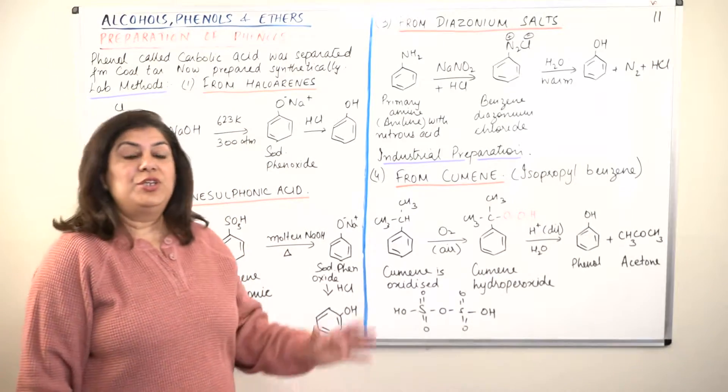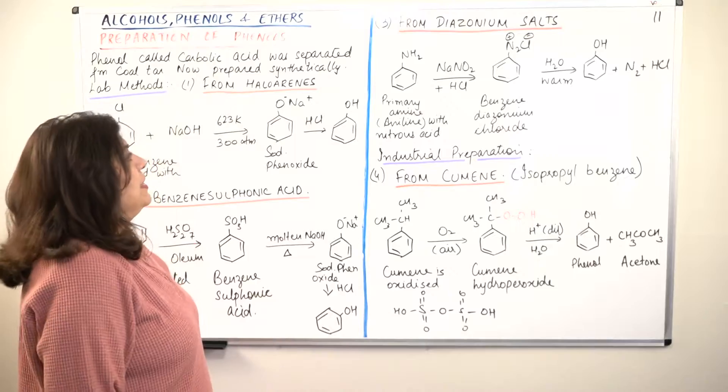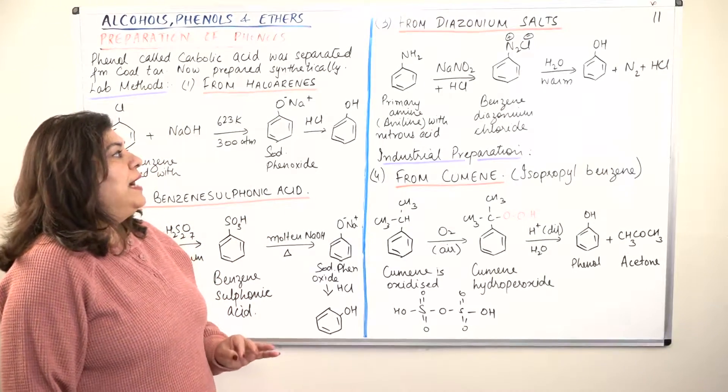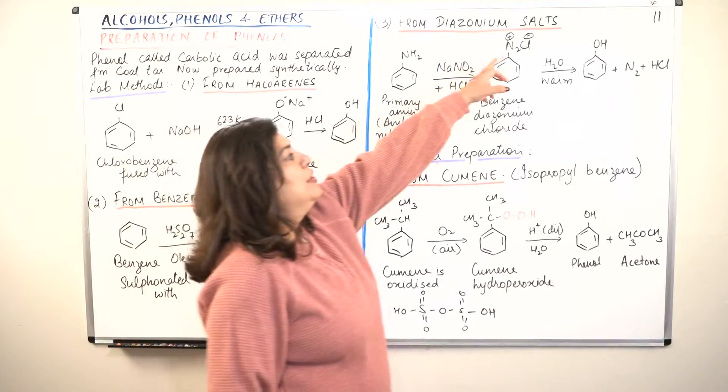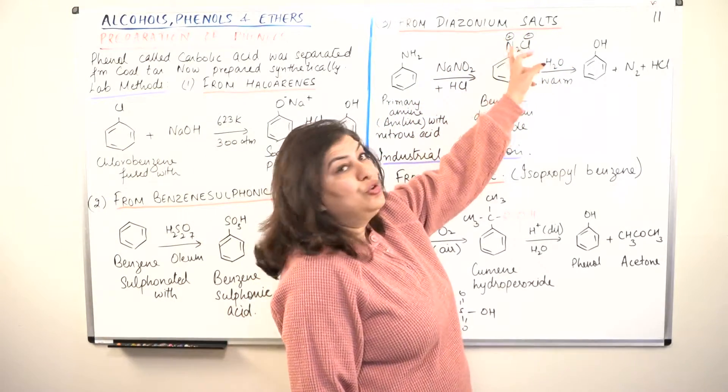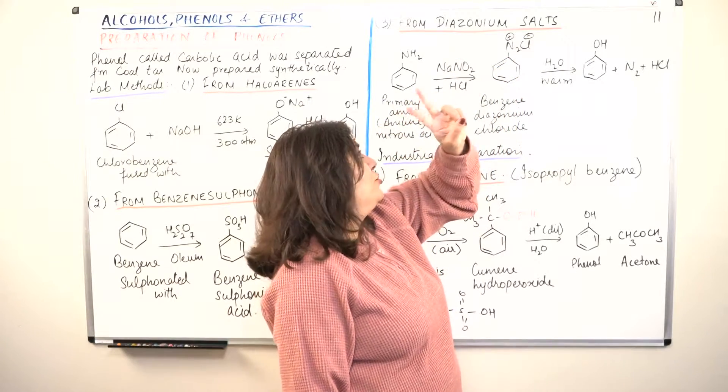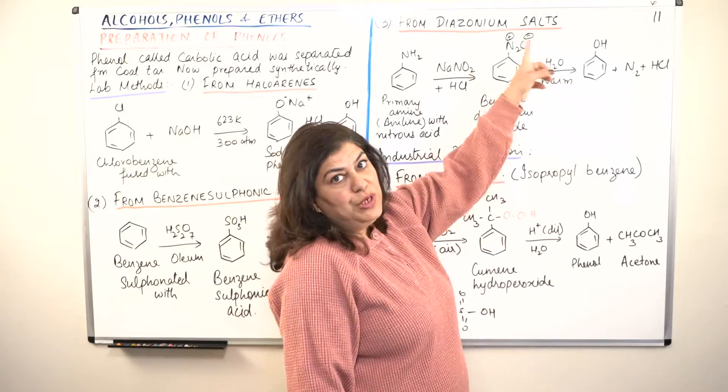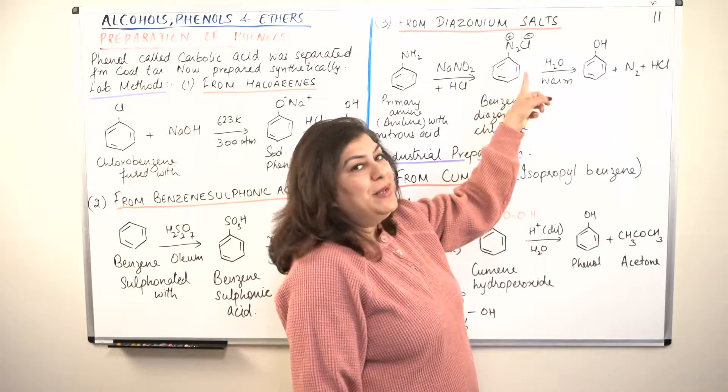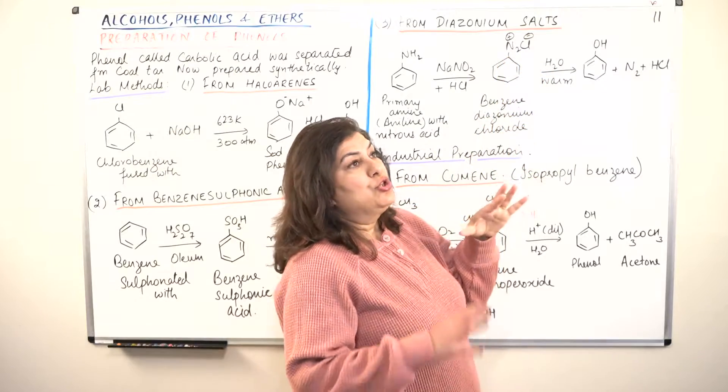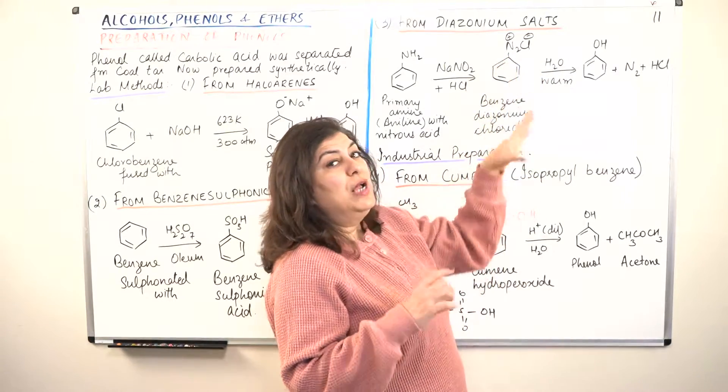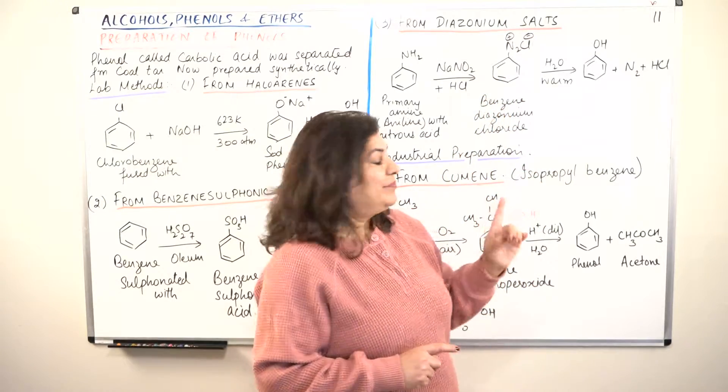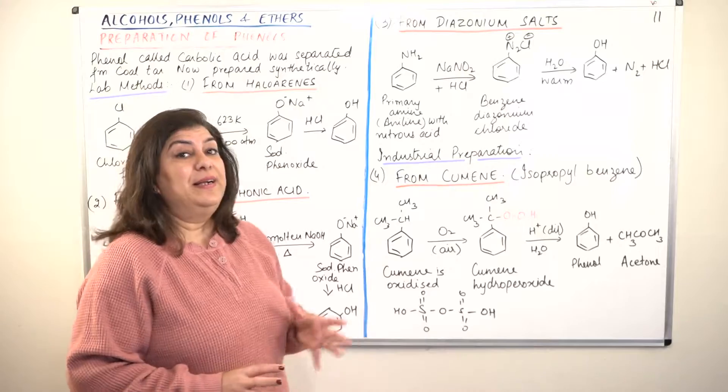The third method of preparation is also a laboratory method - from diazonium salts. A diazo group is N2Cl. N2 group is diazo group, and Cl is a salt with chlorine. So this is a diazonium salt, and since it is attached to benzene, it is a benzene diazonium salt. The diazonium is N2, which is the salt - it is a chloride. So we'll call it benzene diazonium chloride.